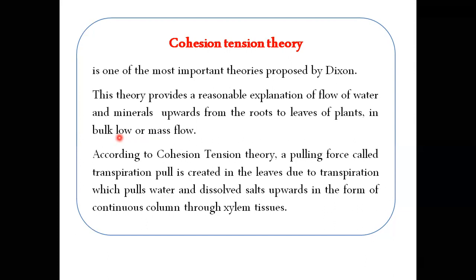According to cohesion tension theory, a pulling force is created in the leaves due to transpiration. This pulling force is called transpiration pull. And this transpiration pull is responsible for the upward movement of water and dissolved salts in a continuous column through the xylem tissue.